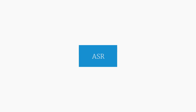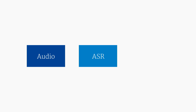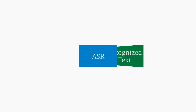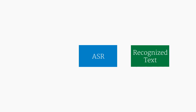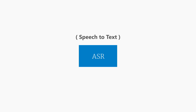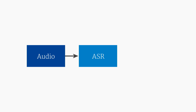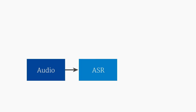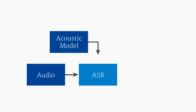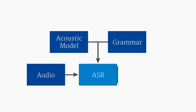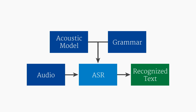Speech recognizers take an incoming audio signal containing human speech and convert it into text, which is why ASR is sometimes also called speech-to-text. An ASR compares the audio signal to a built-in database called an acoustic model and uses something called a grammar to limit the comparison. We'll talk about each of these individually.